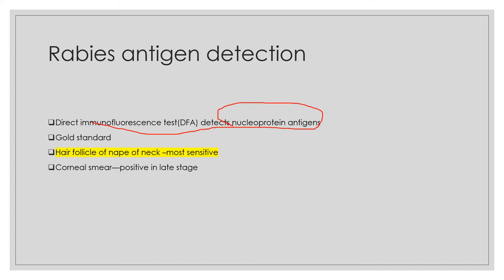The best specimen for DFA antigen detection is the hair follicle from the nape of the neck — this is a very commonly asked exam question. Corneal impression smear can also be used but is positive only in the late stage with only 30% sensitivity. Remember: for antigen detection, the best specimen is the hair follicle of the nape of the neck, not the cornea.